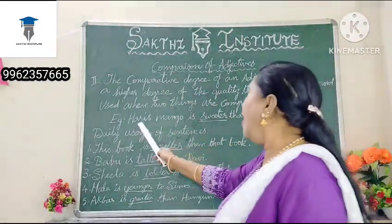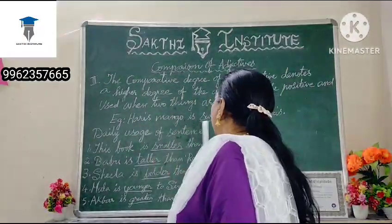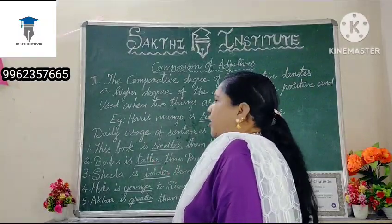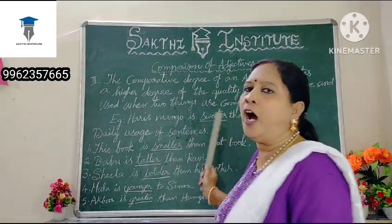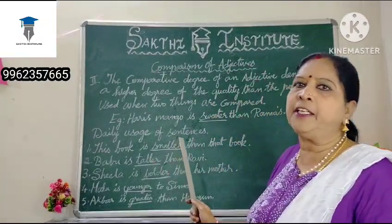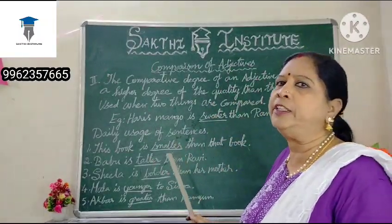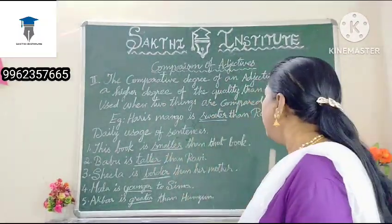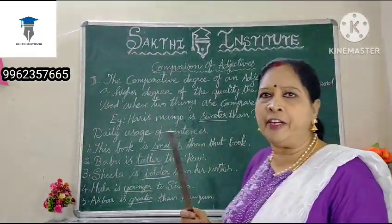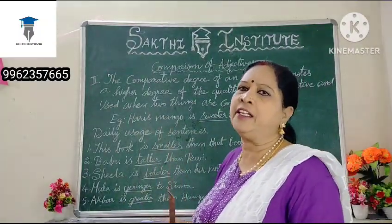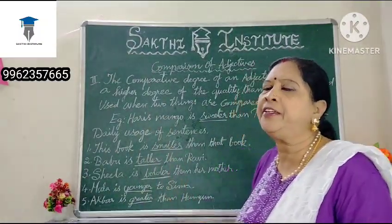Example: Harish's mango is sweeter than Rama's. Sweeter than — this is the comparative form used when comparing two things.